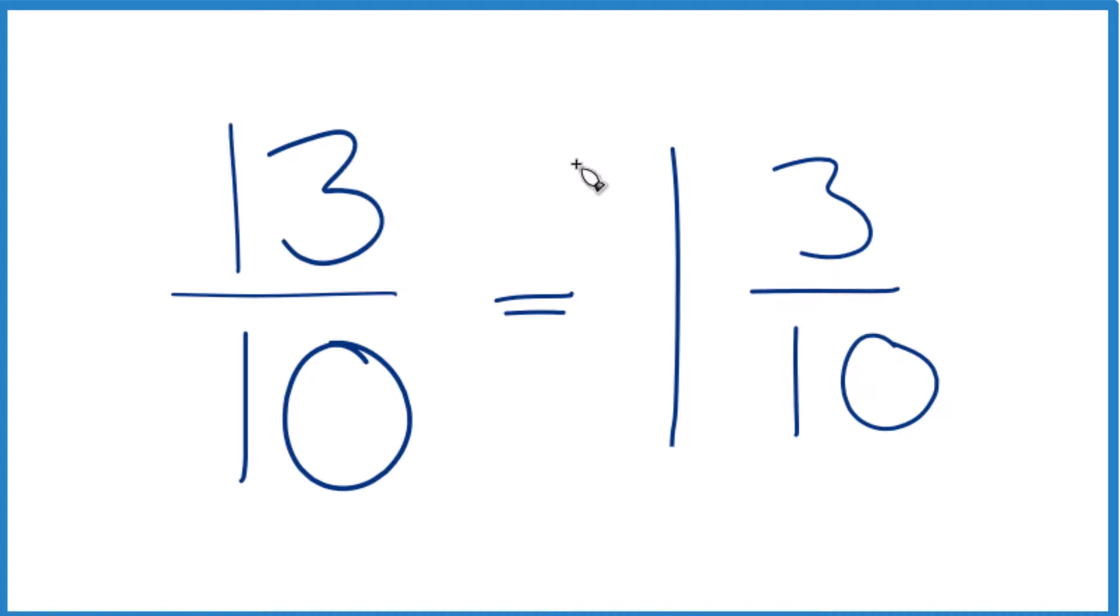We can check our work too because 1 times 10, that's 10. 10 plus 3, that's 13. And then we just kept this 10 here, the same over here as our denominator.